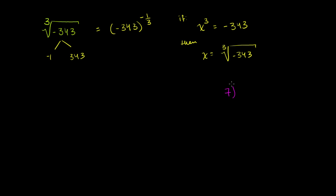7 goes into 343. 7 goes into the 34 four times. 4 times 7 is 28. Subtract. 34 minus 28 is 6. Bring down the 3. So 343 goes into 63 nine times. 9 times 7 is 63. Subtract. We have no remainder. So it goes in exactly 49 times. So 343 is the same thing as 7 times 49. And 49 is 7 times 7.